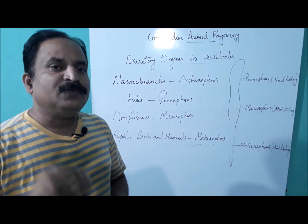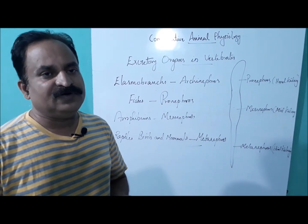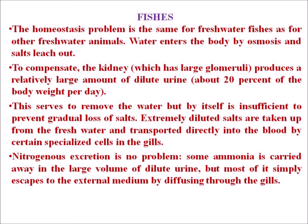The homeostasis problem is the same for freshwater fishes as for other freshwater animals. Water enters the body by osmosis and salts leach out. To compensate, the kidney, which has large glomeruli, produces a relatively large amount of dilute urine — about 20% of the body weight per day. This serves to remove the water, but by itself is insufficient to prevent gradual loss of salt. Extremely diluted salts are taken up from the freshwater and transported directly into the blood by certain specialized cells in the gills.